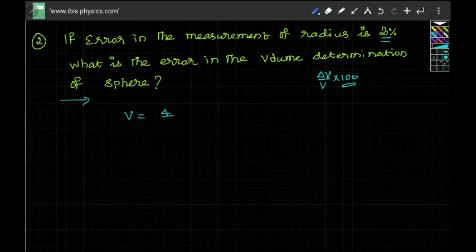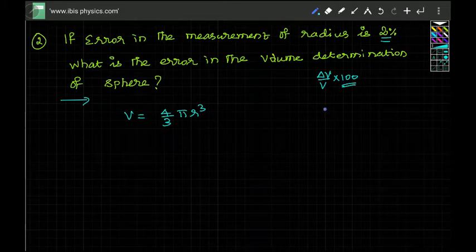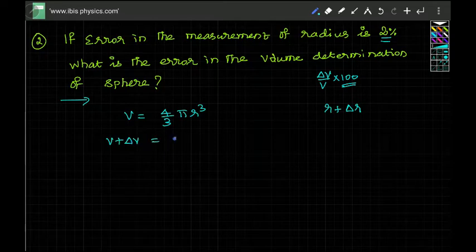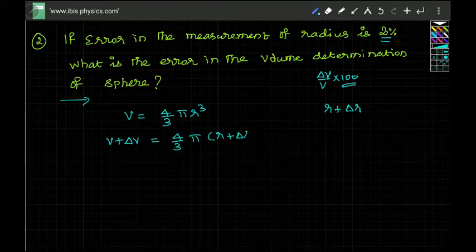Since r has error, r is expressed as r plus delta r. Using that, if we calculate, the volume will have some error: volume plus delta v equals four by three pi times (r plus delta r) whole cube. It will be useful to take volume out from these two terms.